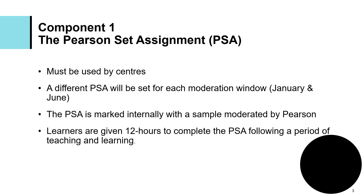For Component 1, learners are given 12 hours to complete the PSA following a period of teaching and learning. The component is allocated 36 guided learning hours, so learners should have around 24 guided learning hours to cover the unit content and develop the knowledge and skills required to tackle the PSA in the final 12 hours of the component.